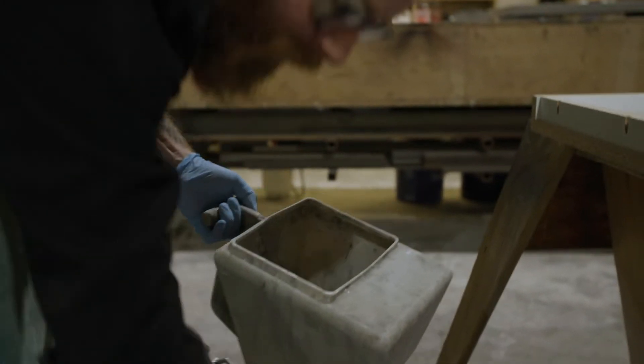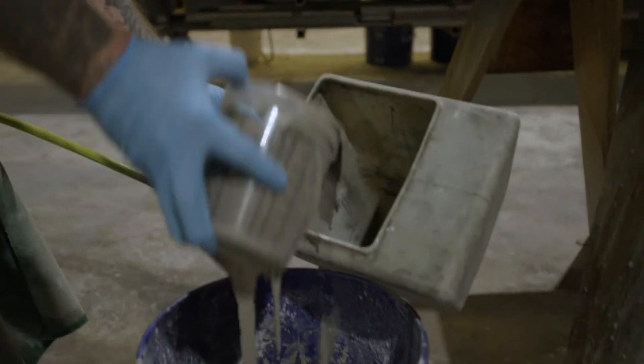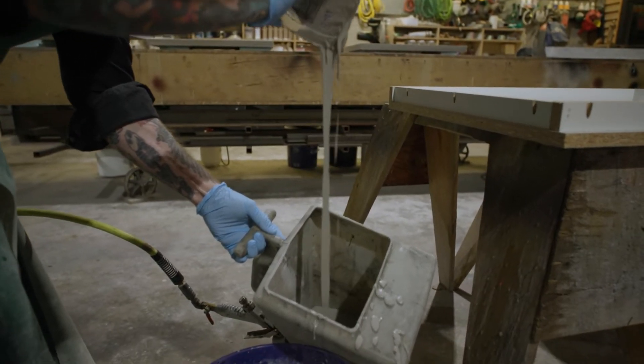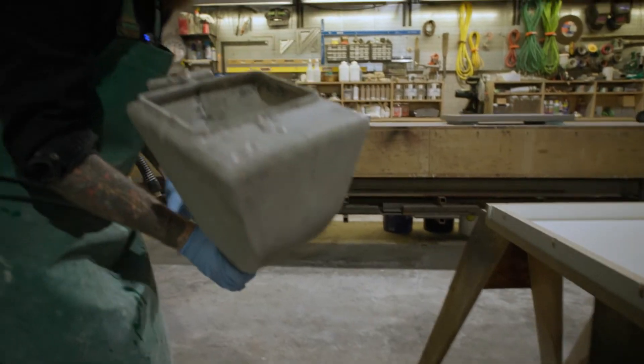Pour the mix into a drywall hopper gun. You want the mix to be a milkshake consistency. If it's too thick, add a little more water and blend again.